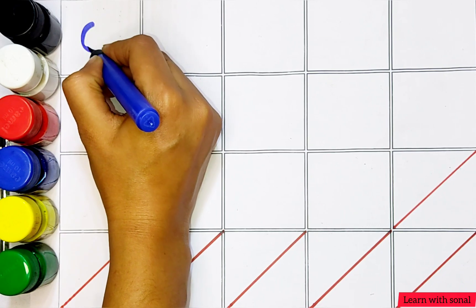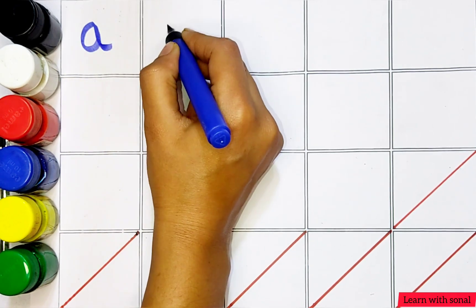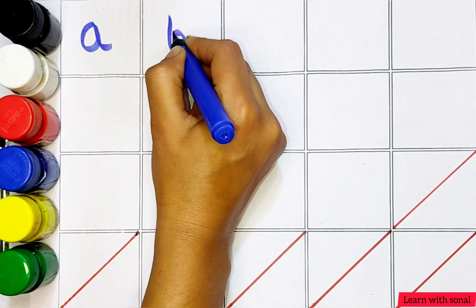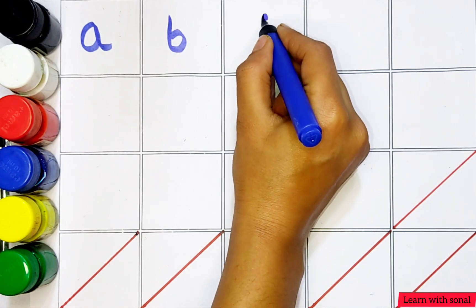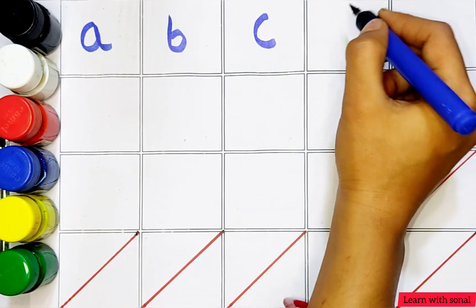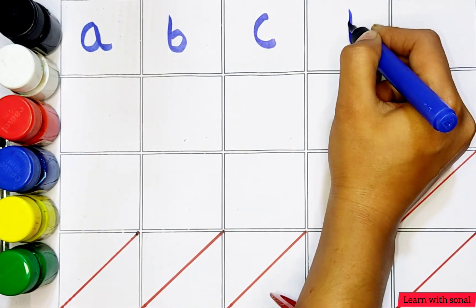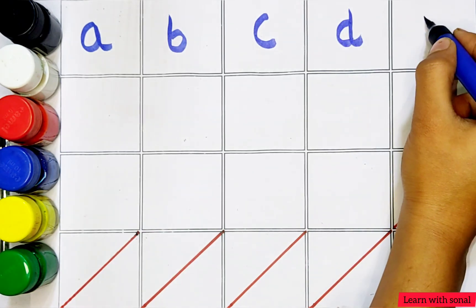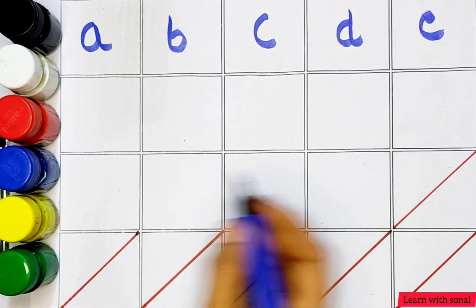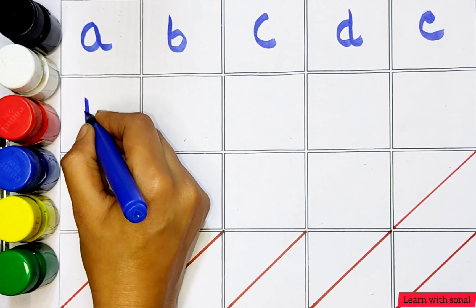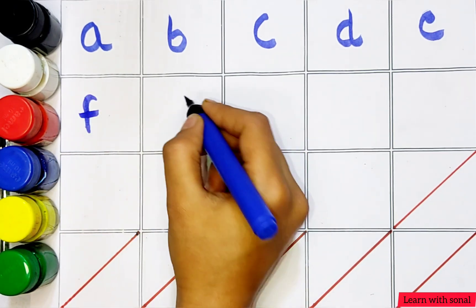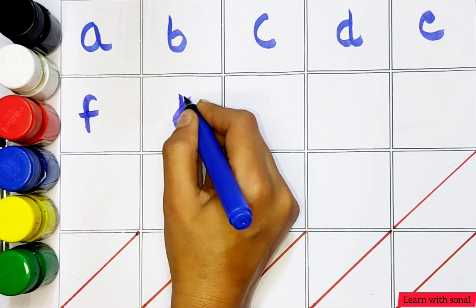A. A for apple. B. B for ball. C. C for cat. D. D for doctor. E. E for elephant. F. F for fish. G. G for guitar.